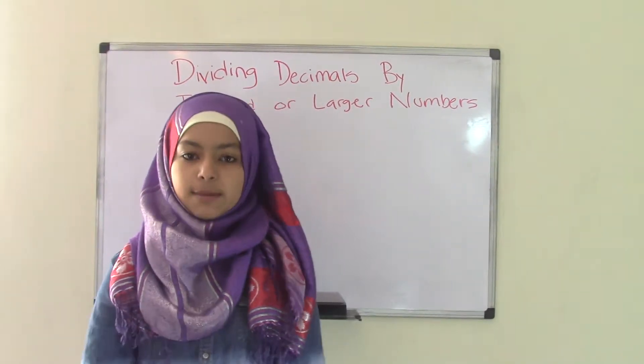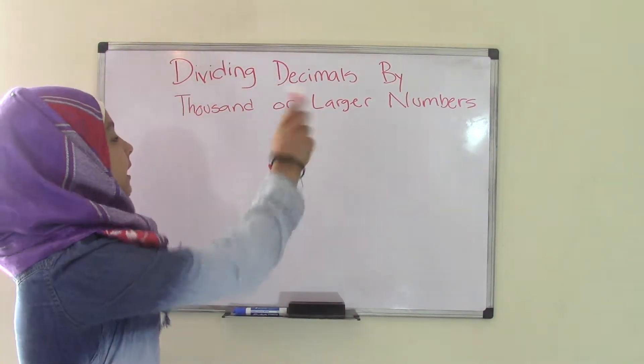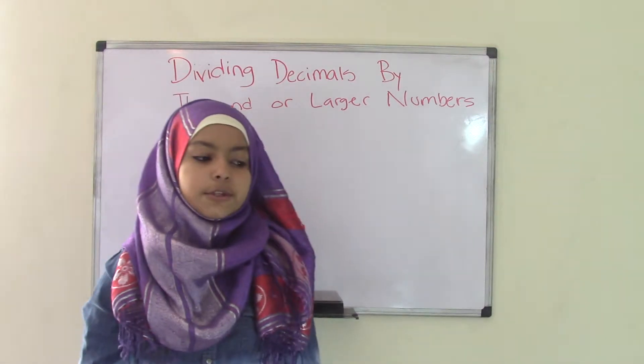Hey guys, welcome back to Bro and Systematic Club. Today's topic is dividing decimals by thousand or larger numbers.